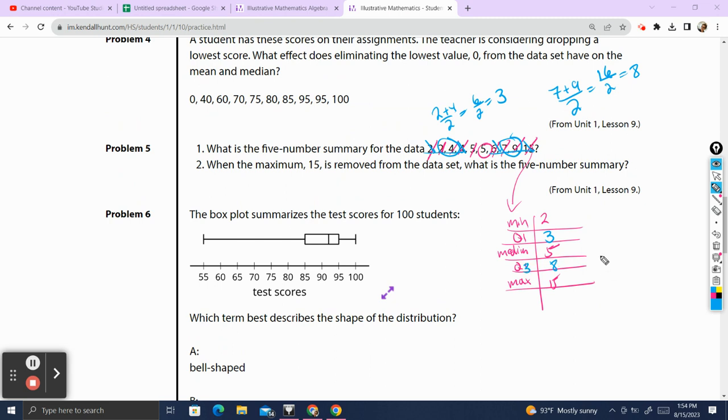So our five number summary is going to be two, three, five, eight, and fifteen. And that gives us a general sense of the distribution of our values of this data set.